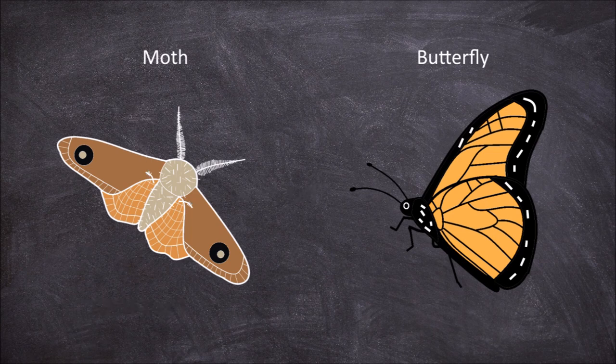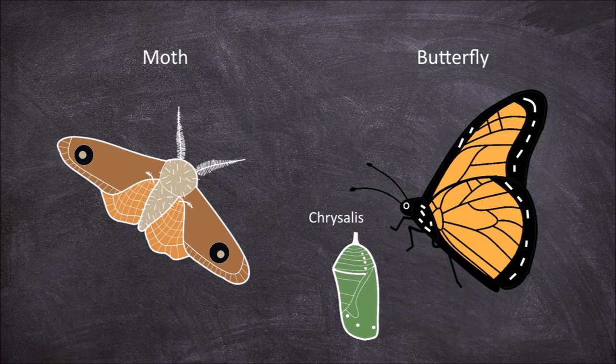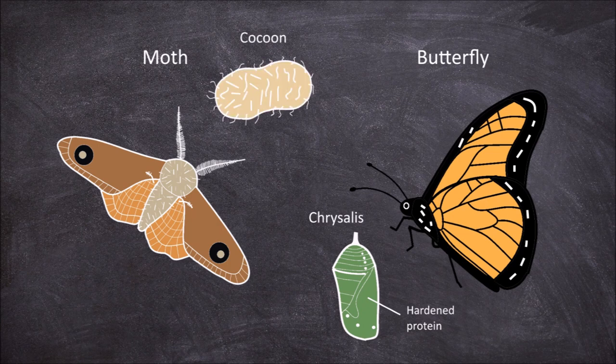Butterflies and moths also differ in their pupae stage. Both groups go through complete metamorphosis. During metamorphosis, butterflies form a chrysalis in the pupae stage, which is made of hardened protein. Moths on the other hand form cocoons, which are made of silk.